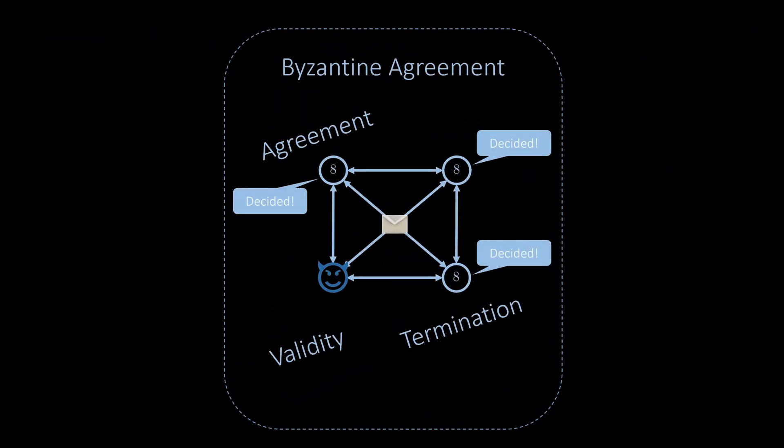Let's summarize what we've learned. We defined the Byzantine agreement problem, which is a variant of the consensus problem where some nodes may exhibit Byzantine behavior. This means that some nodes may deviate from the given consensus algorithm in arbitrary ways.